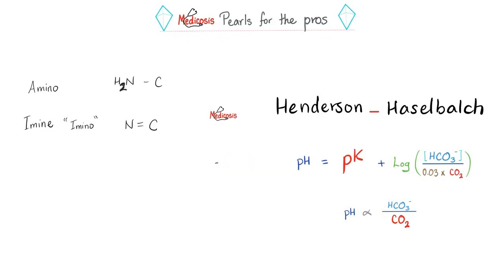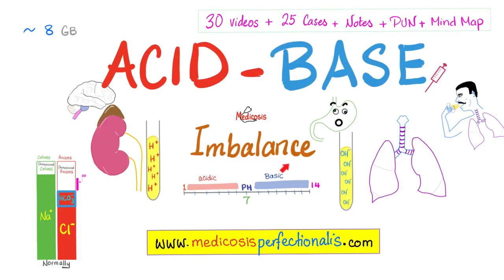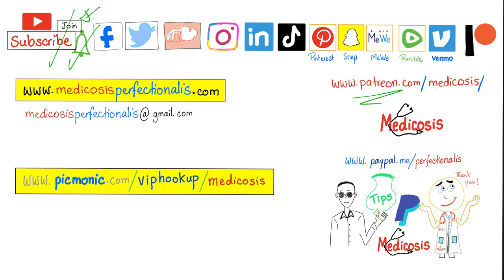Some pearls for the pros. What's the difference between amino and imine? Amino is C bound to N with a single bond. But imine has a double bond. Don't forget the pH and the pKa. They are also involved in the Henderson-Hasselbalch equation. What if the numerator equaled the denominator? When this equals this, the ratio is going to be 1. What's the log of 1? Zero. And now the pH equals the pKa. As you add more bicarbonate, pH goes up. As you add more carbon dioxide, pH goes down. If you want to learn more about pH, check out my Acid Base Imbalance course on my website medicosisperfectionalis.com. Thank you for watching. Please subscribe, hit the bell, and click on the join button. This is Medicosis Perfectionalis, where medicine makes perfect sense.